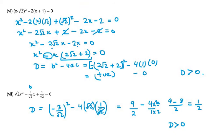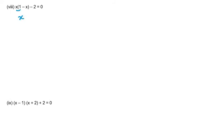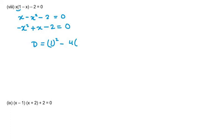The eighth part is x times (1 minus x) minus 2 equals 0. Expanding gives x minus x squared minus 2 equals 0. Rearranging into quadratic form: minus x squared plus x minus 2 equals 0. D equals b squared minus 4ac, where b is 1, a is minus 1, and c is minus 2. So D equals 1 minus 8, which is minus 7. Since D is less than 0, the equation has no real roots.